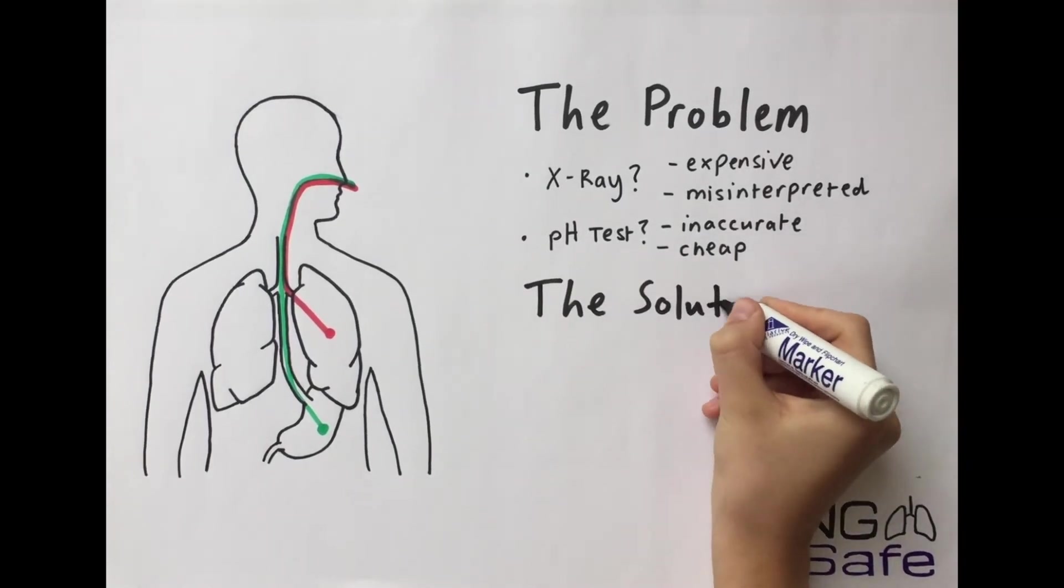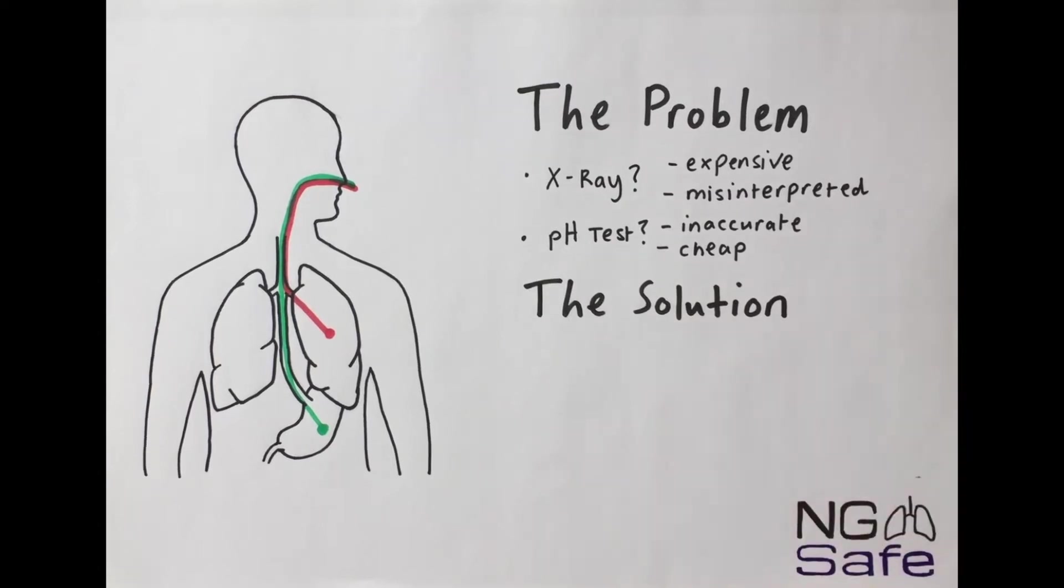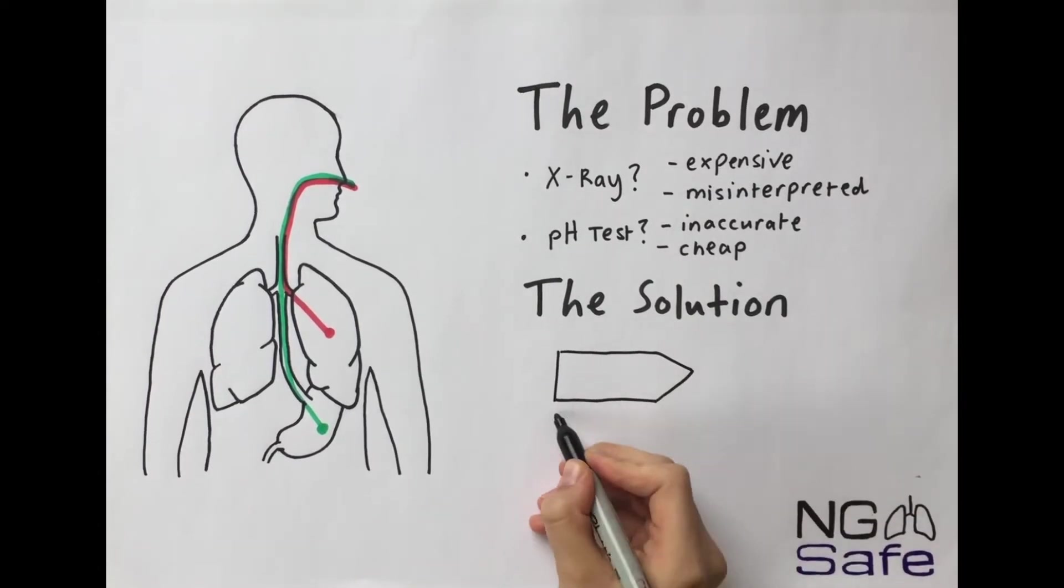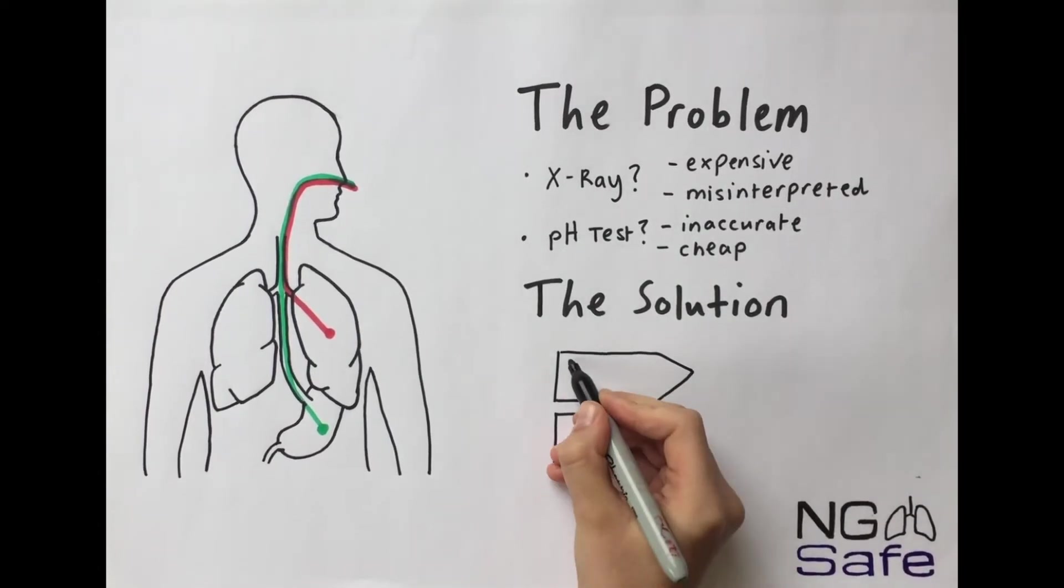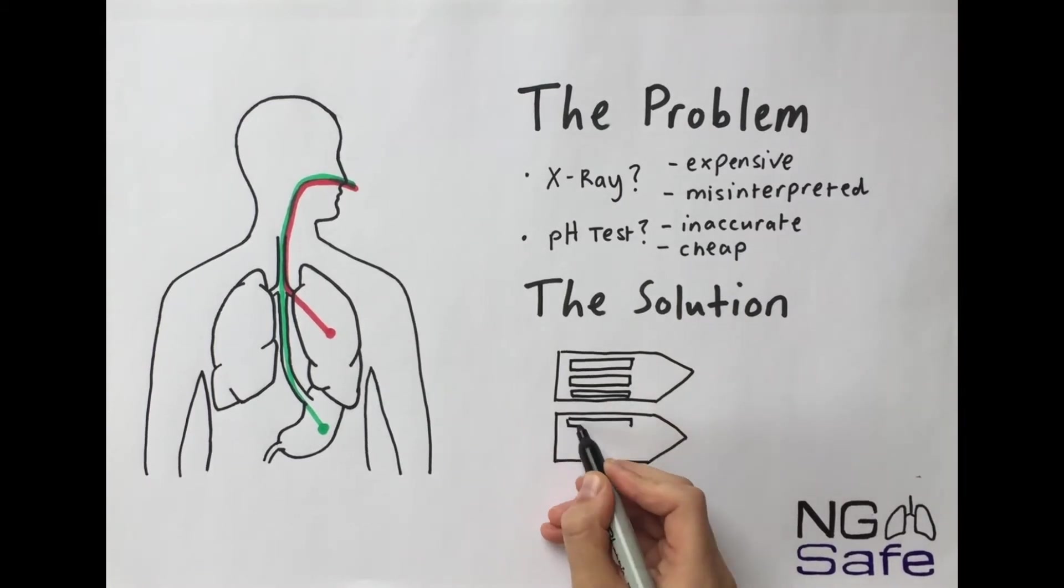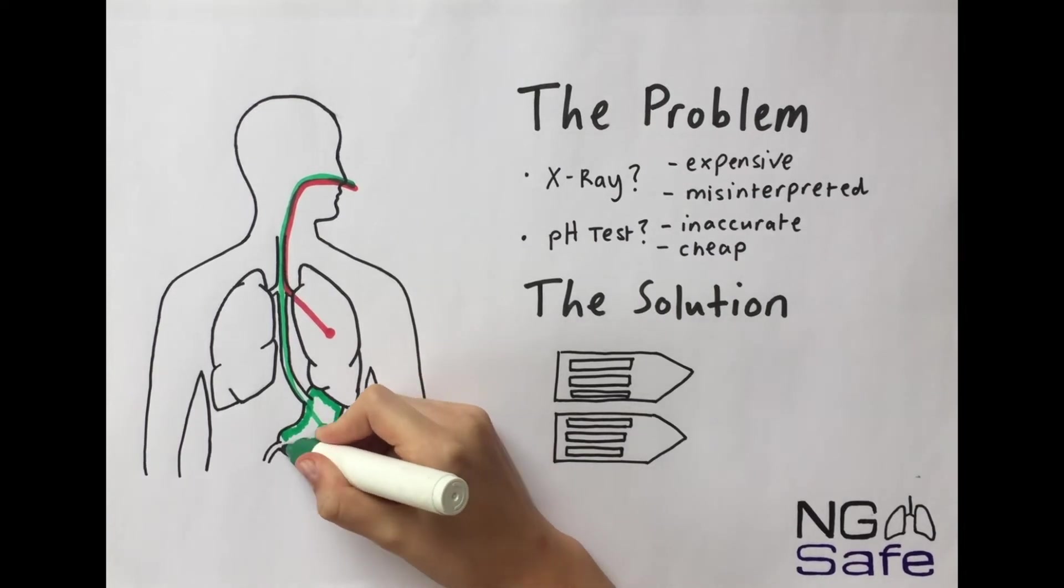The solution is NGSAFE. NGSAFE comprises a simple yet unequivocal biochemical test which can tell the fundamental differences between the microenvironment of the lung and of the stomach.